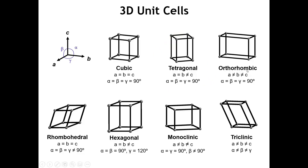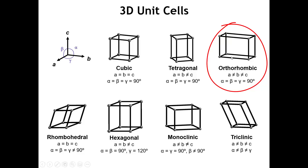If we make all three lattice vectors of differing lengths but yet at right angles to each other, then we get an orthorhombic unit cell. In the orthorhombic unit cell, each face of the unit cell is a rectangle.